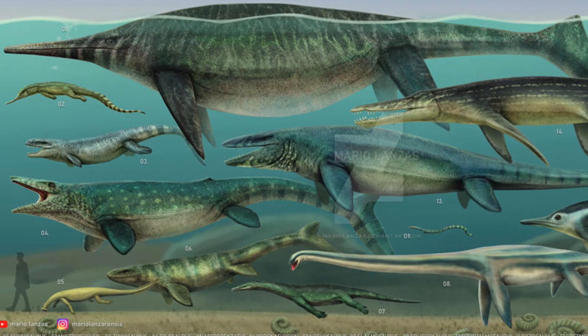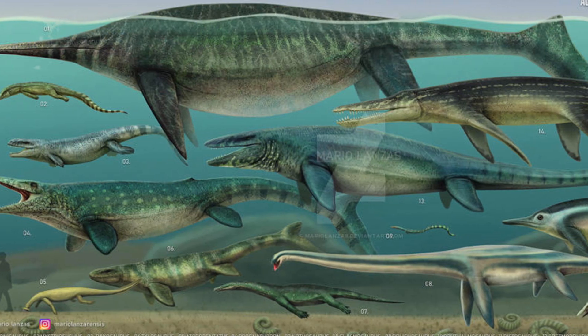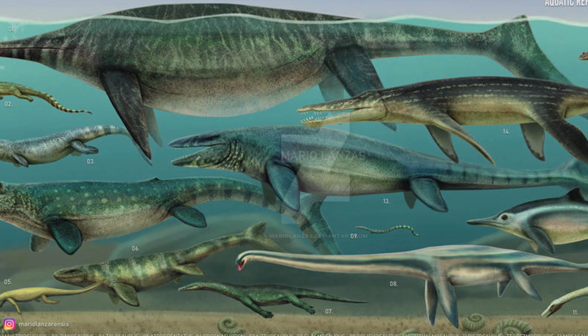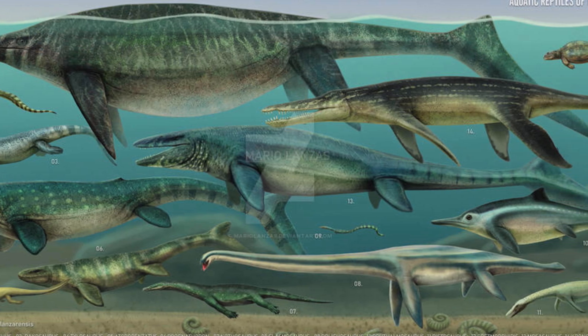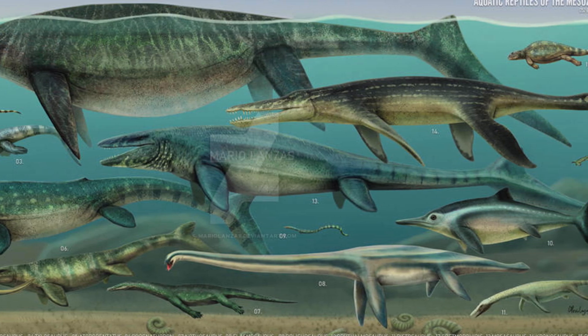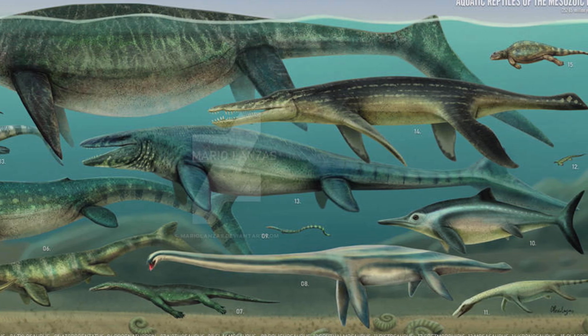The oceans back then were primarily dominated by reptiles, and over the course of the Mesozoic there were several different groups of reptiles that took their turn as the top predators in their ecosystem, whereas today the top predators are basically the whales and the pinnipeds — seals and sea lions.